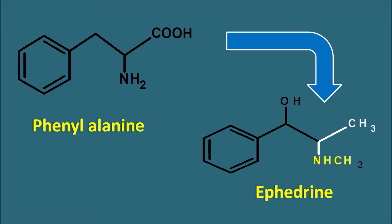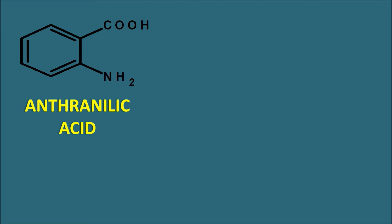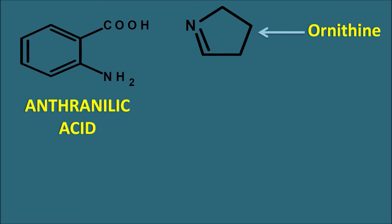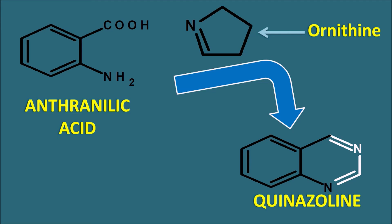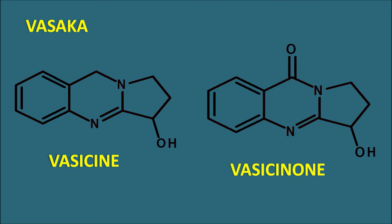Because ephedrine causes tachycardia, it is now less preferred as a bronchodilator; its isomer pseudoephedrine is used as a nasal decongestant. Anthranilic acid, an intermediate in tryptophan biosynthesis, can combine with a five-membered nitrogen-containing ring system derived from ornithine to give the quinazoline nucleus — a six-plus-six ring system with nitrogens at positions 1 and 3. The vasaka alkaloids contain this quinazoline nucleus: vasicine has the quinazoline fused with a pyrrolidine ring, and vasicinone has an additional ketone at position 4. These act as expectorants.